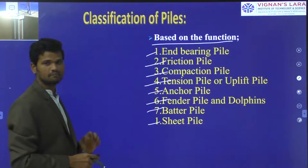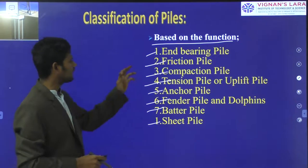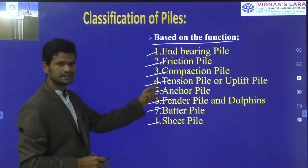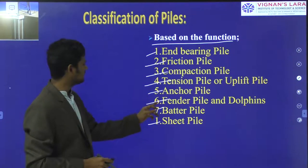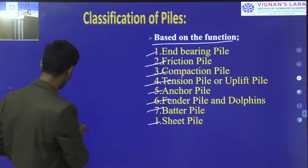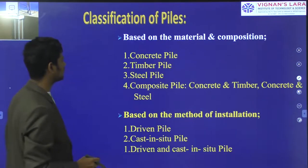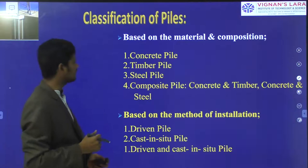Coming to the baseline function, we are having end-bearing pile, friction pile, compression pile, tension pile or uplift pile, anchor pile, fender pile and dolphins, batter pile and sheet pile. These are the different types of piles. We will see the individual type discussion of each individual pile.